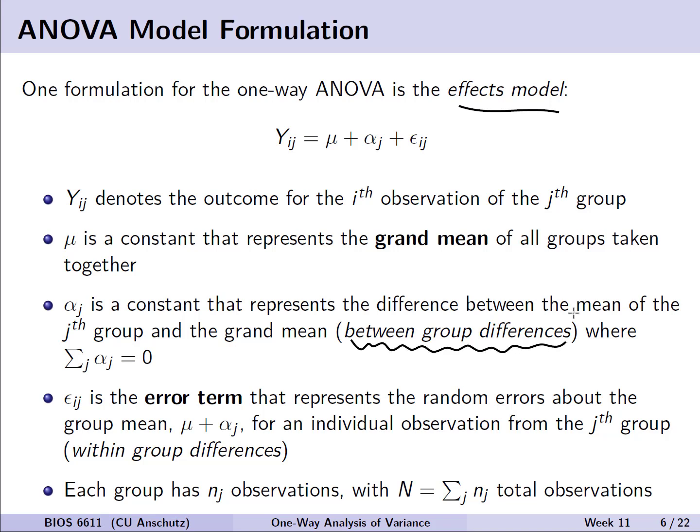One restriction in this model is that the alpha_j's must sum to zero. Much like in our linear regression framework, we then add an error term, epsilon_ij, which represents the random error about the group mean — mu plus alpha_j — for each individual observation in that group, or the within-group differences. Each group will have n_j observations, where capital N represents the total number of observations for the entire study.